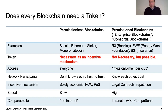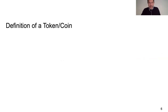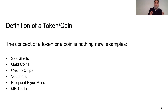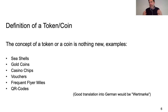For permissioned blockchains, we don't need that kind of consensus mechanism. The concept of a token and a coin outside the blockchain context is nothing new — it has been around for thousands of years. Examples include seashells, gold coins, casino chips, vouchers, frequent flyer miles, and QR codes. If you're a native German speaker, a good translation would be 'Wertmarke.'